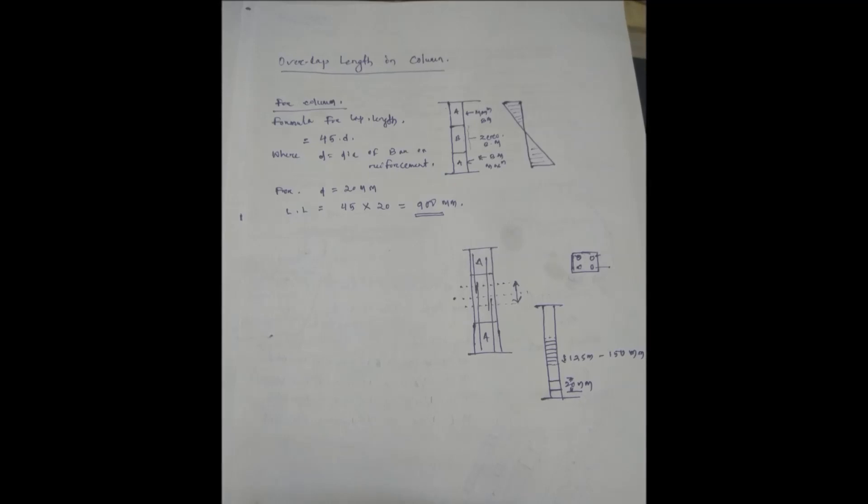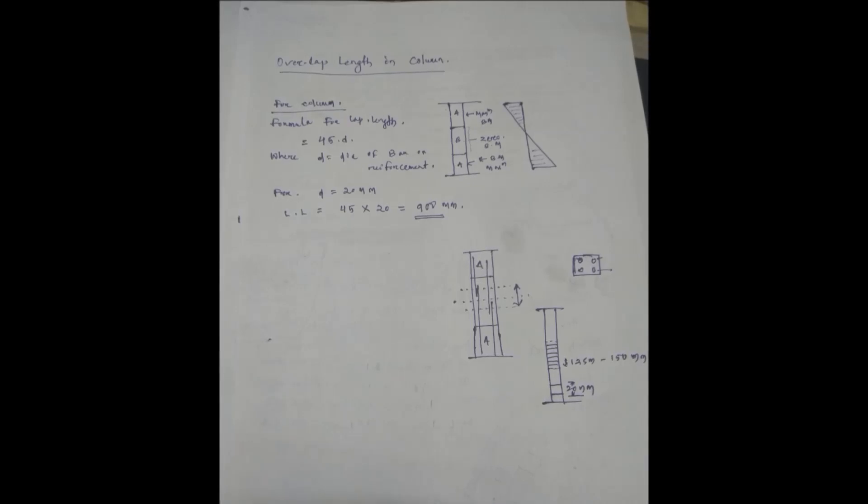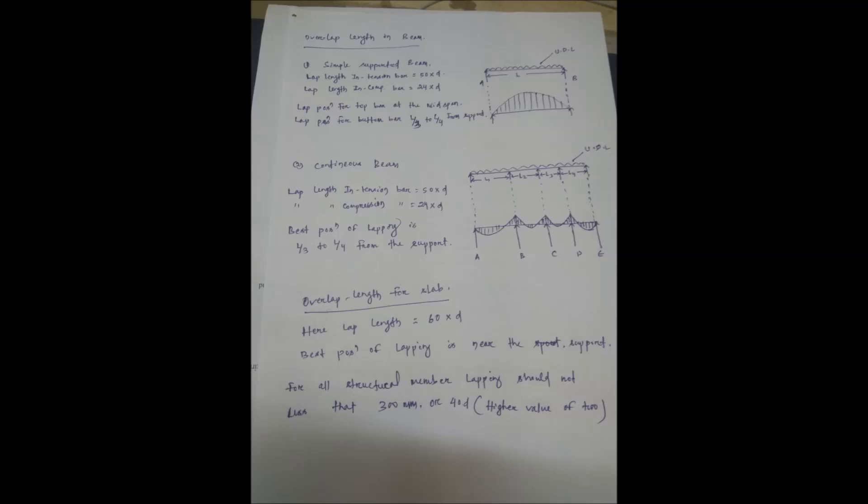Now comes to how much and where to provide lapping length in beam. We are advised not to create lap in simple supported beam, but if it is necessary then we can do it. If you draw bending moment diagram of a simple supported beam, we can see the bending moment is high at the mid span and it becomes zero towards the support. Here lower bars experience